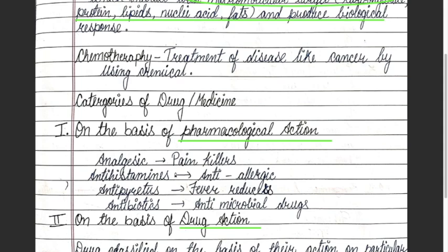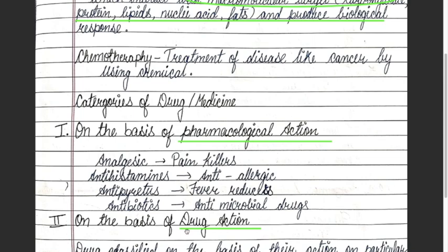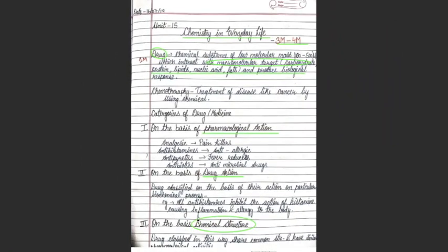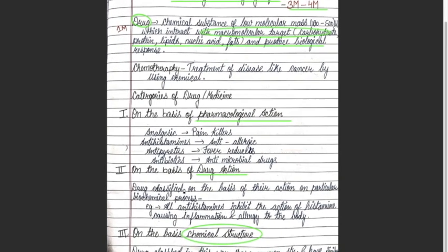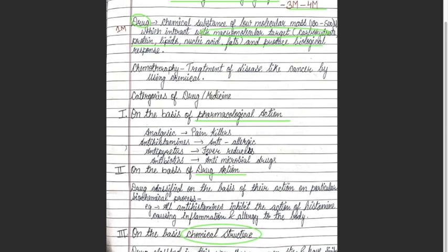Another classification of drugs is on the basis of drug action — that is, the action on a particular biochemical process. For example, antihistamines inhibit the action of histamines, which cause inflammation and allergic reactions in our body. So drugs can be classified based on what biochemical process they act upon.